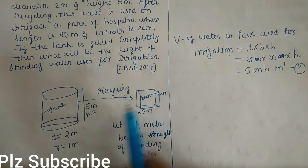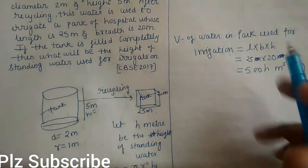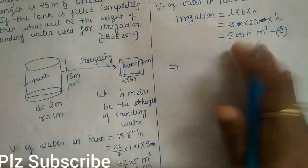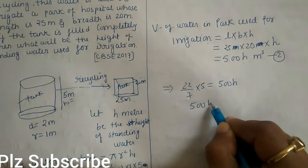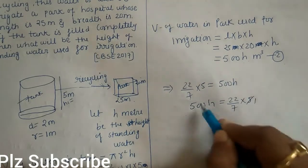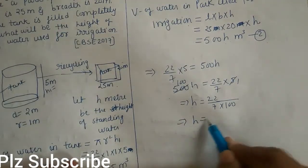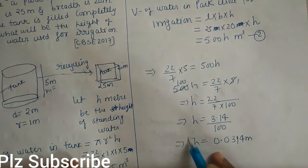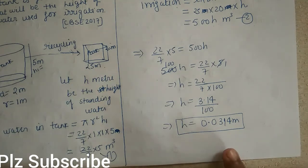Since the water in the park comes from the tank, the volume of water in the tank equals the volume of water in the park. So (22/7) × 5 = 500 h, which gives h = (22 × 5) / (7 × 500) = 22/700 = 22/7 × (1/100) ≈ 3.14/100 = 0.0314 meter. This is the correct answer, verified from the internet, as it is not given in the RS Aggarwal book.